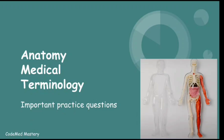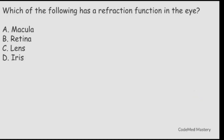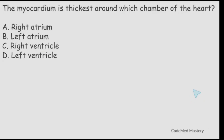First question: which of the following has a refraction function in the eye? Option A: macula. Option B: retina. Option C: lens. Option D: iris. The right answer is option C, lens, because the lens focuses light and images which are formed on the retina.